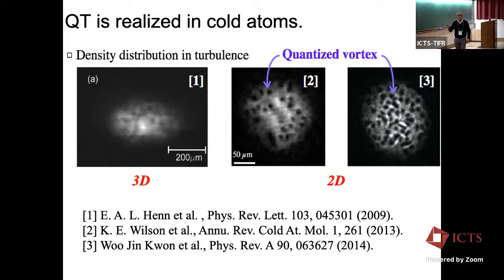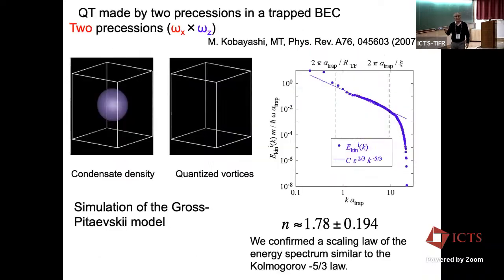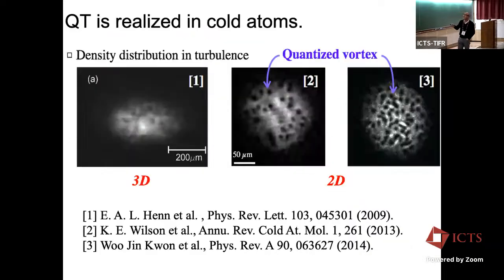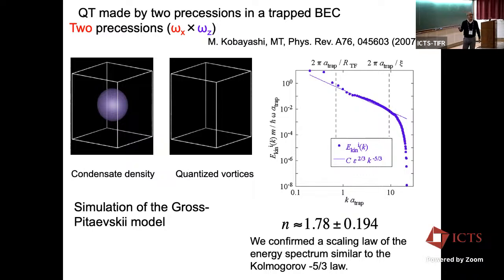The exponent of 1.78 is different from 5/3, but that's acceptable because our system is neither isotropic nor homogeneous. The important point is that we obtained a power-law spectrum. In this case we injected dissipation at small scales and excited the system, so this is a statistical steady state.